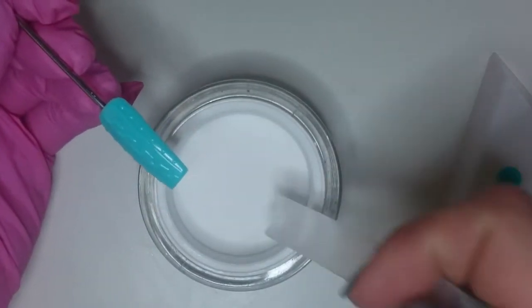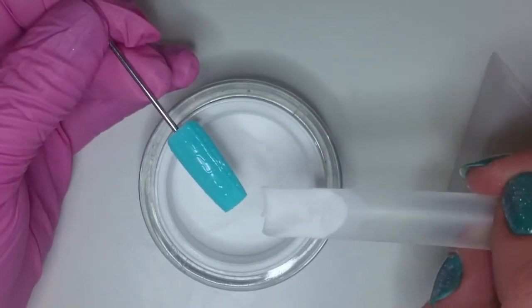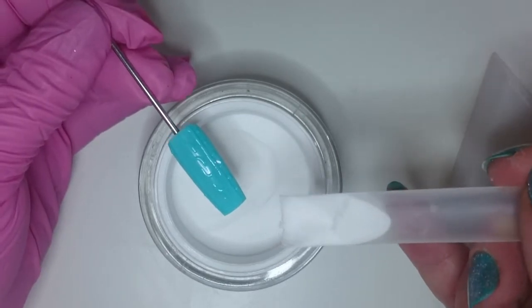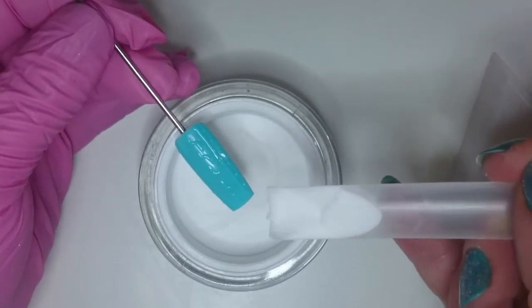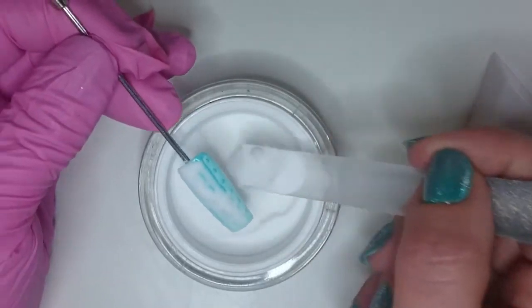And I'm going to scoop some onto the wet gel. So remember there was a no wipe top coat on there before, so the powder is not going to stick to the no wipe top coat, it's only going to stick to the wet gel. And I'm going to put it in the wet gel like so.